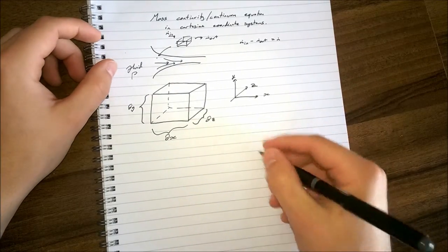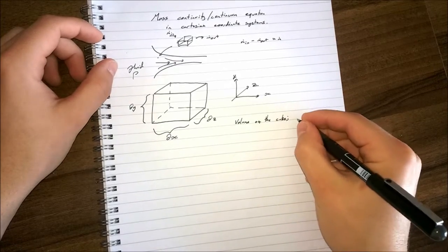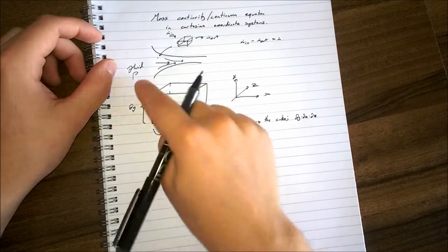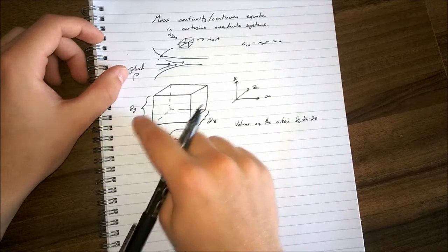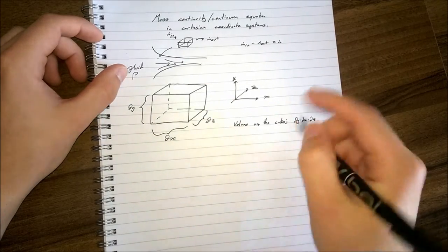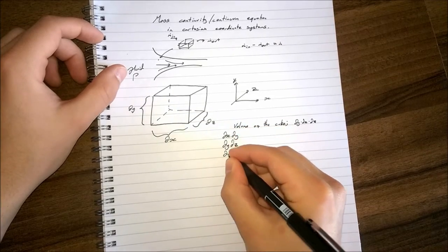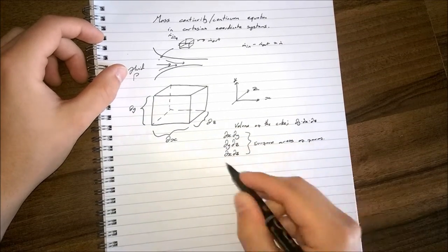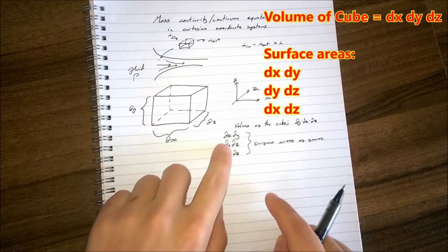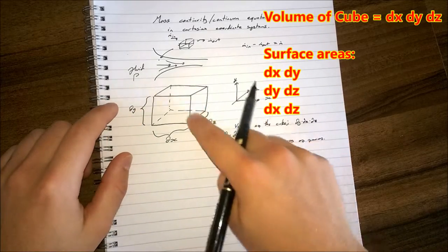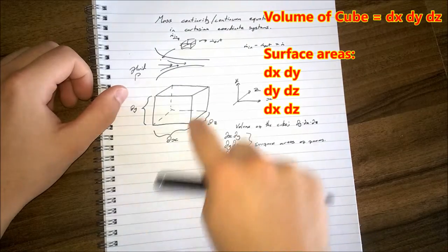Because it's a cube, the volume equals the width times the height times the depth — that's DX · DY · DZ. We can also identify the surface areas of each face: the front/back faces are DX·DY, the left/right faces are DY·DZ, and the top/bottom faces are DX·DZ.